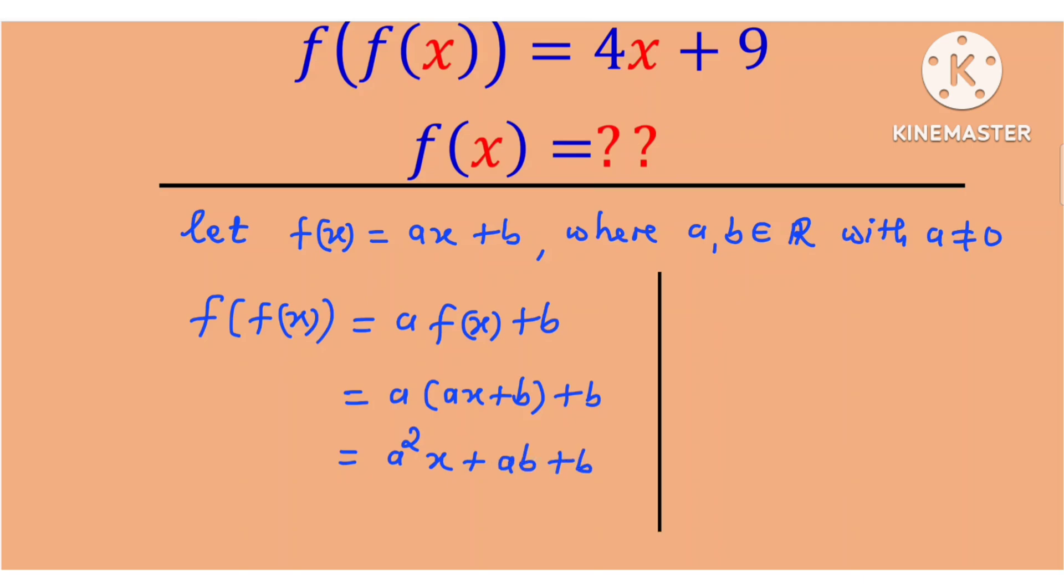And if we compare this with 4x plus 9, we are going to obtain a squared to be equal to 4, and ab plus b to be equal to 9. So let's call this equation 1 and call this equation 2.